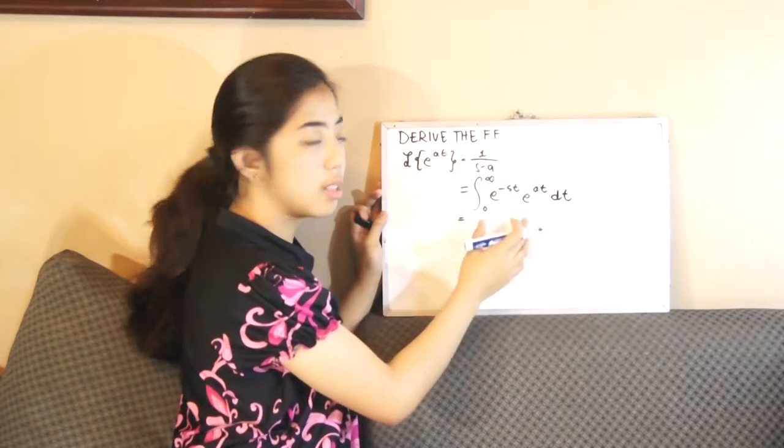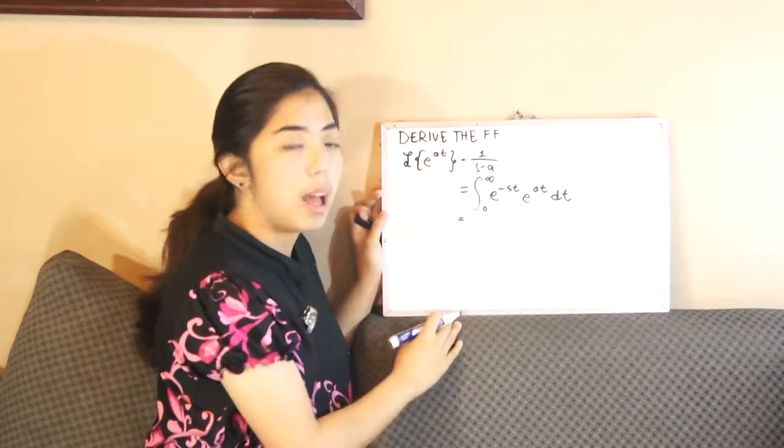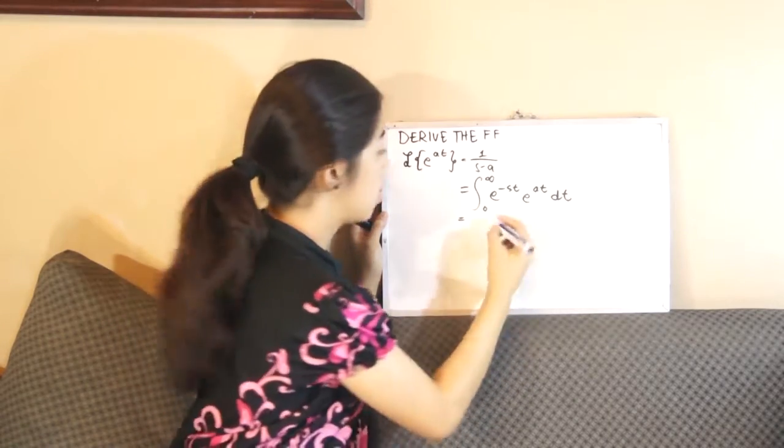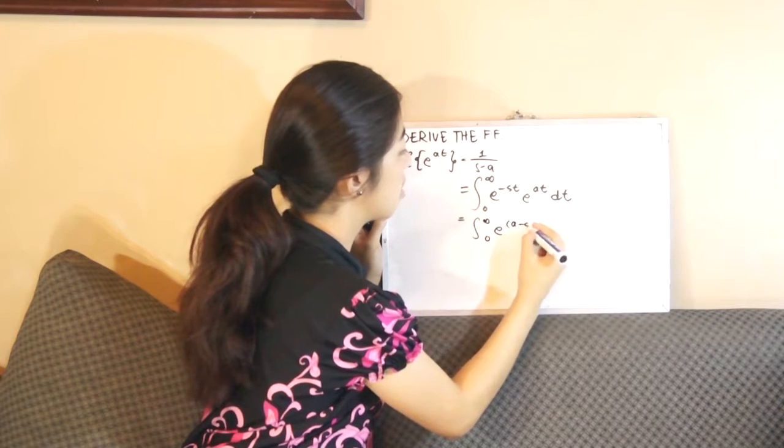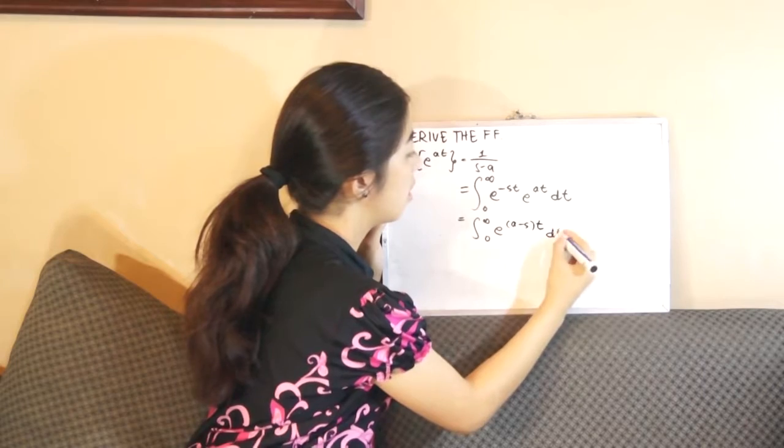The variable is the same so we multiply them. Now we can add the exponents such as e raised to a minus s times t, dt.